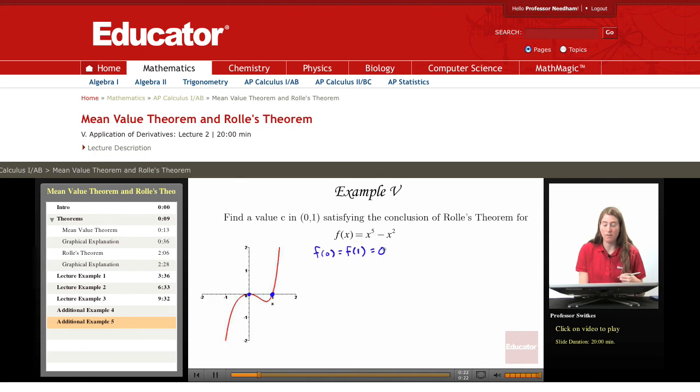It's continuous everywhere and differentiable everywhere. The secant line here is a horizontal line. What we're arguing is that we can find a tangent line that is also a horizontal line for some c value between 0 and 1.